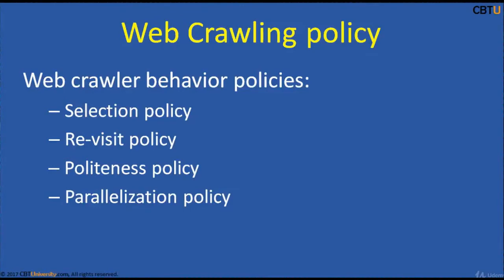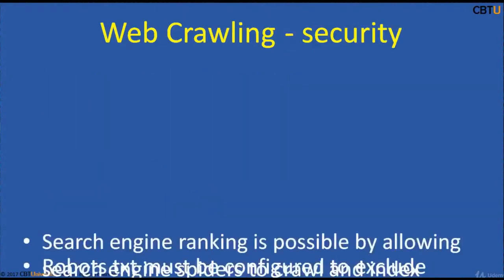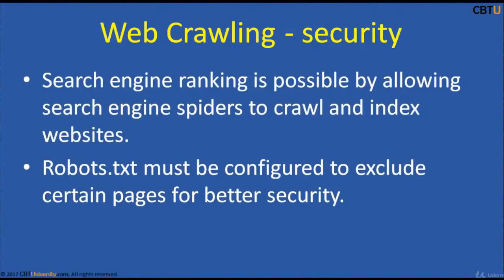The politeness policy is to avoid overloading websites, as crawlers consume resources on the remote server, overloading and impacting the performance of the website. The parallelization policy describes how to coordinate distributed web crawlers.